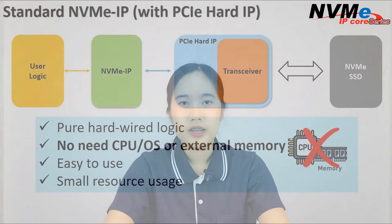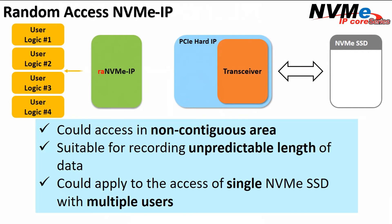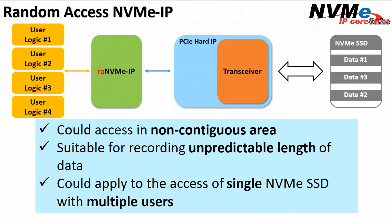Second is Random Access NVMe IP. This solution is compatible with applications requiring access in non-contiguous areas, recording unspecified lengths of data, and for accessing one SSD by multiple users.